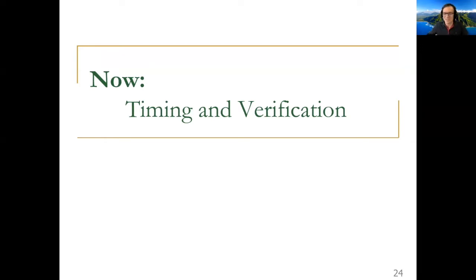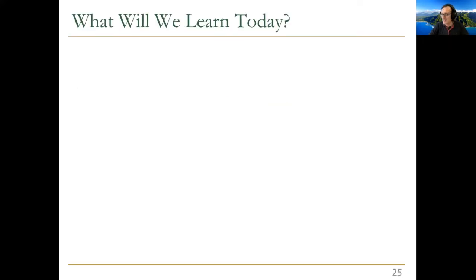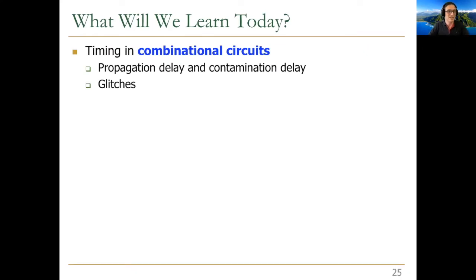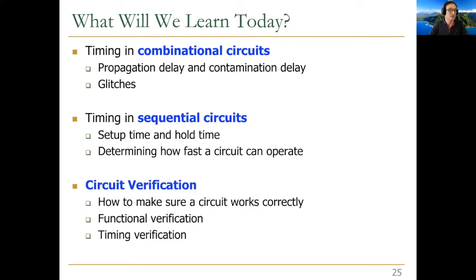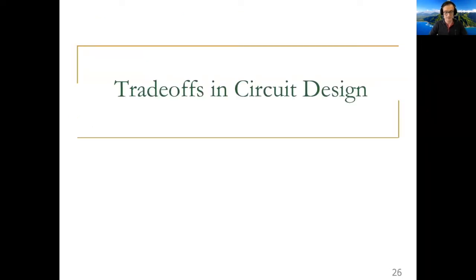Now let's go into timing and verification. We'll cover timing in combinational circuits — short path and long path delays, propagation and contamination delays — briefly discuss glitches, then cover timing in sequential circuits defining setup time and hold time. We'll determine how fast a circuit can operate and cover circuit verification. So far we've assumed timing doesn't play into our decisions, but timing is essential — everything has a delay.